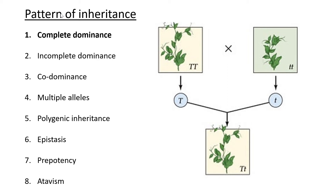In the previous lesson we were introduced to basic genetics and we looked at mono and di-hybrid crosses. Today we're going to look at different patterns of inheritance. In the previous lesson the example we looked at was complete dominance.